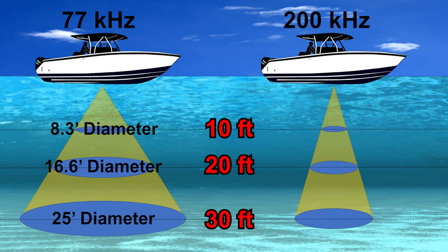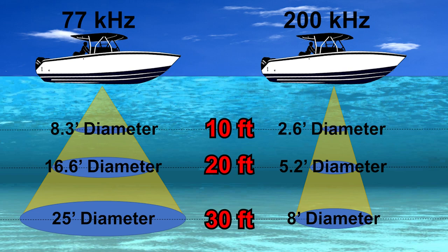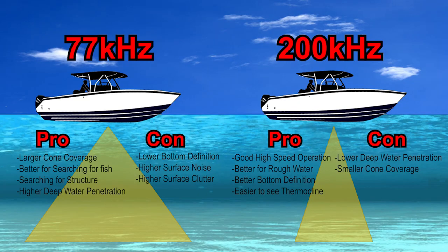Comparing to the 200 kHz frequency selection: at 30 feet of water our sonar cone covers about 8 feet in diameter, only about 5.2 feet in 20 feet of water, and only about 2.6 feet in 10 feet of water. Higher frequencies use narrow beam widths, which tend to be better for high speed operation or rough sea conditions, and provide better bottom and thermocline definition. Lower frequencies use a wider beam width, which lets you see more targets in the water but can generate more surface noise and reduce bottom signal continuity, especially in rough seas. Wider beam widths also perform better in deep water because the lower frequency has better deep water penetration.